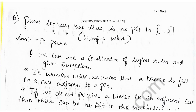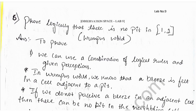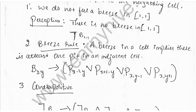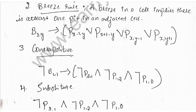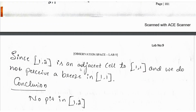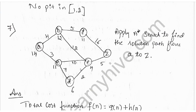Sixth question: prove logically that there is no pit in position 1,2 in the Wumpus world. For finding the solution to this question, there are a few steps which you need to follow. Explanation of all these steps in depth on how to solve these kinds of problems is given in our video course — click on the link in the description to access that.